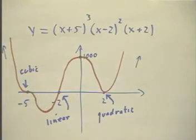Now, the lesson we learned is that near x equals 3 in the last one, everything else stayed pretty constant, and the (x-3)² took over.